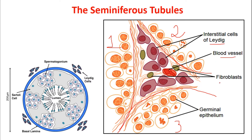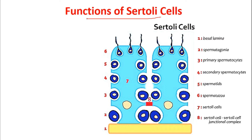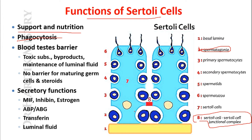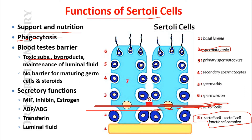Continuing with the functions of the Sertoli cells — most important for the exam. It gives support and nutrition to the developing spermatogonia. It forms the blood-testis barrier, which you are seeing here. The importance of the blood-testis barrier is that toxic substances and byproducts cannot cross it, so the process of spermatogenesis will not be hampered by these substances.